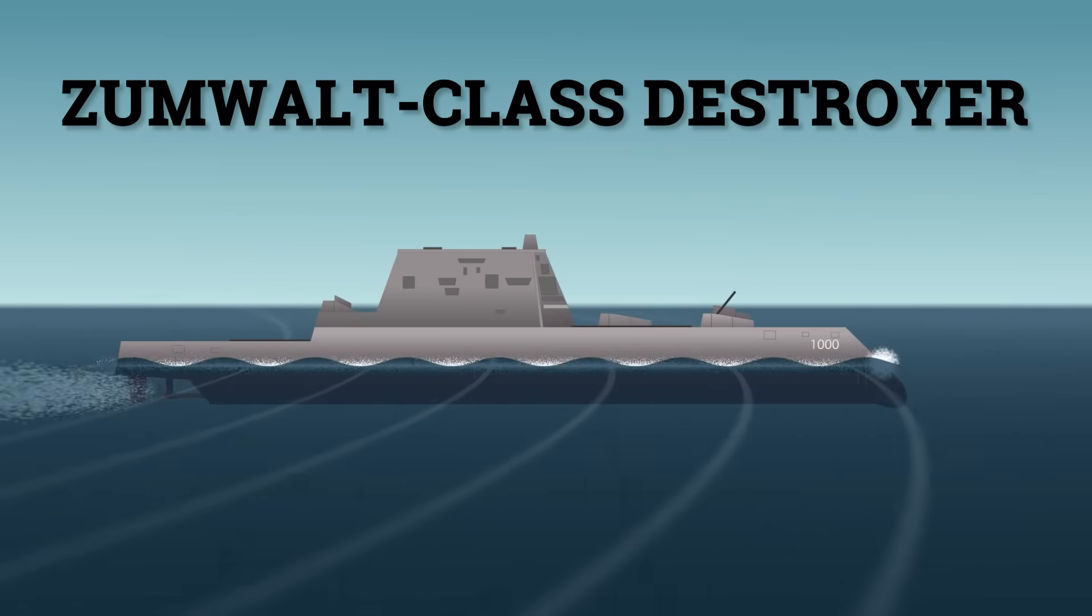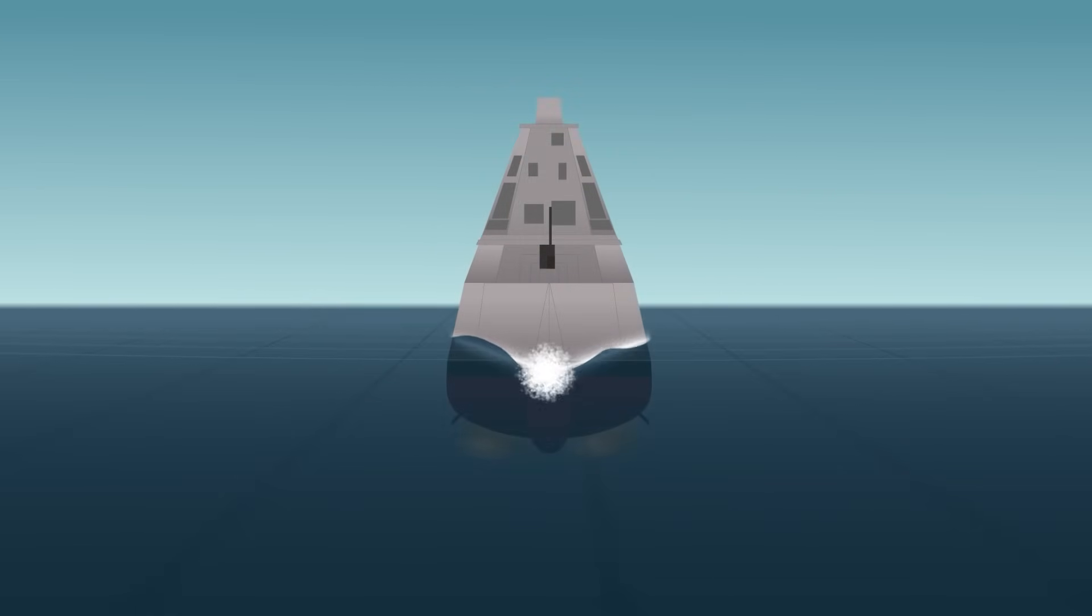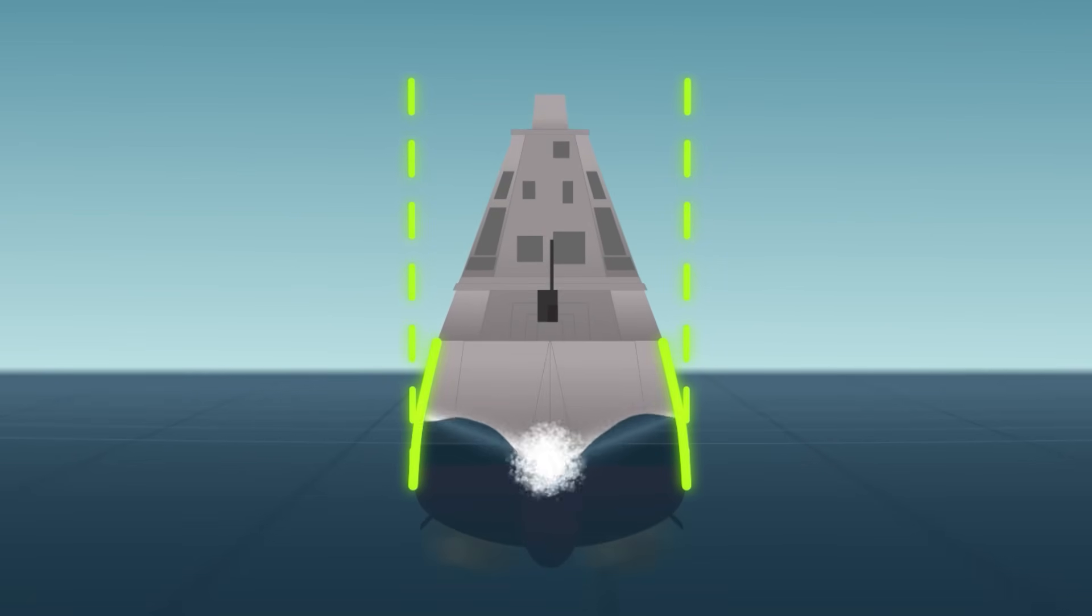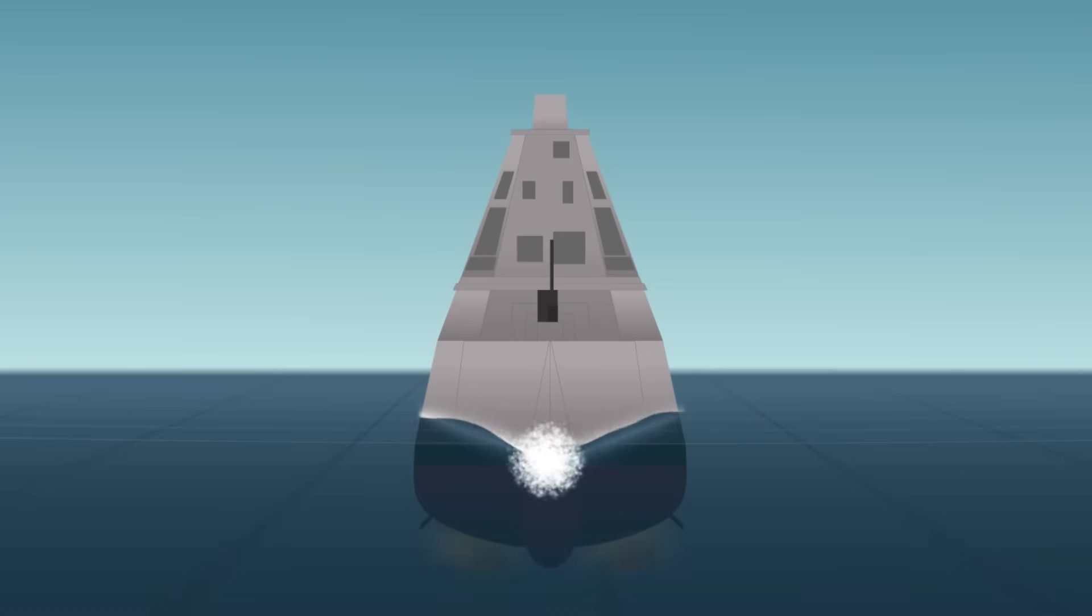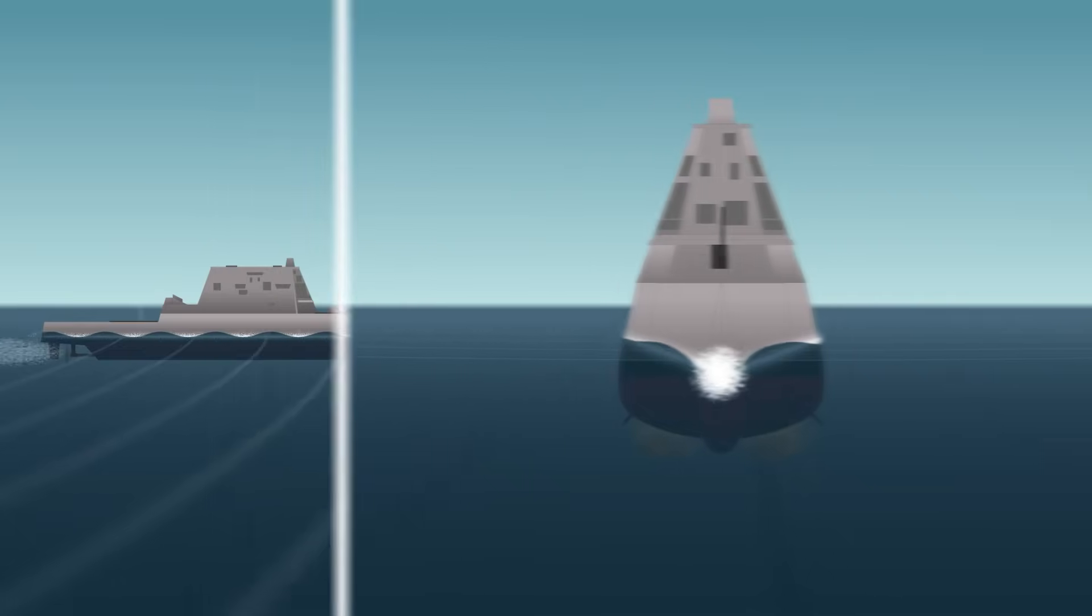The Zumwalt-class destroyer is one of the most advanced warships ever built, and it shows another side of this risk. Its signature feature? A sharp, inward sloping hull called a tumblehome, designed to reduce radar visibility. But that same hull form raised concerns early on.